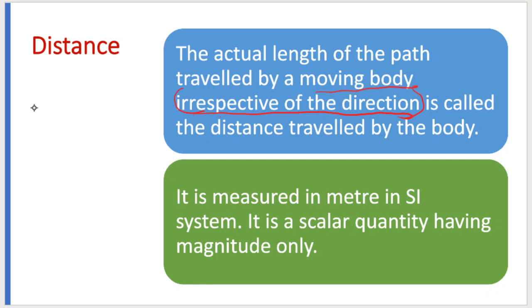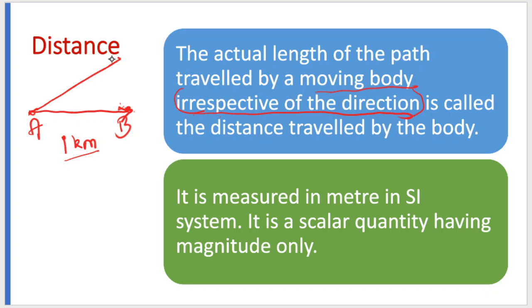Direction is the main point. If you are moving from point A to point B, and the distance between A and B is 1 kilometer, that mentioned distance — you may travel in any direction to cover that 1 kilometer. Distance is therefore said to be a scalar quantity.